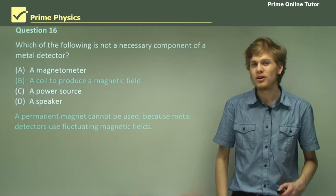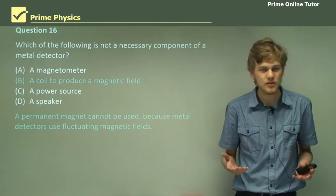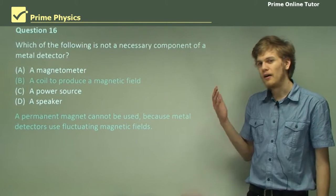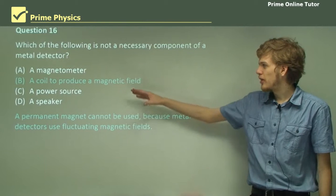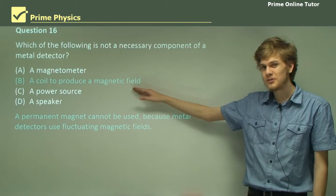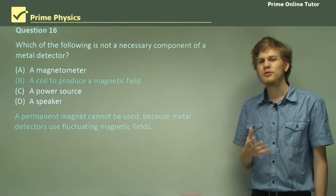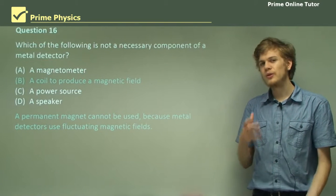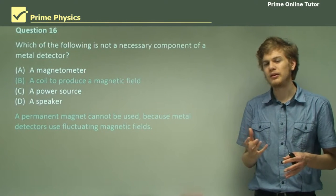Without a coil to produce a magnetic field, we can't even produce eddy currents in the first place. A metal detector without a coil is useless. Remember that we can't really use permanent magnets either, because we need to create a constantly varying magnetic field.